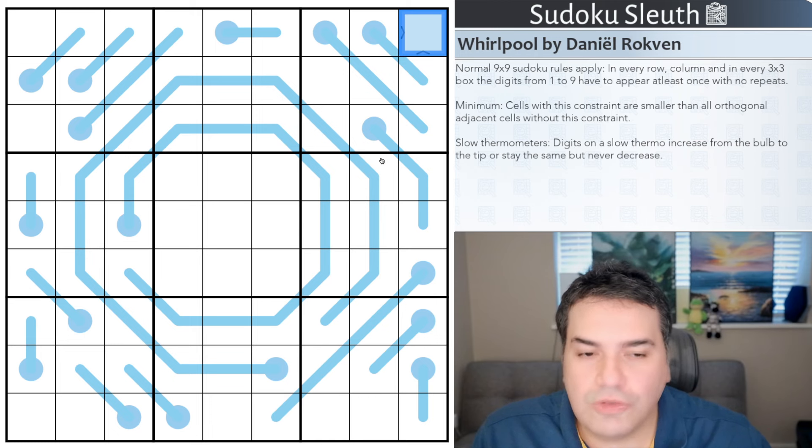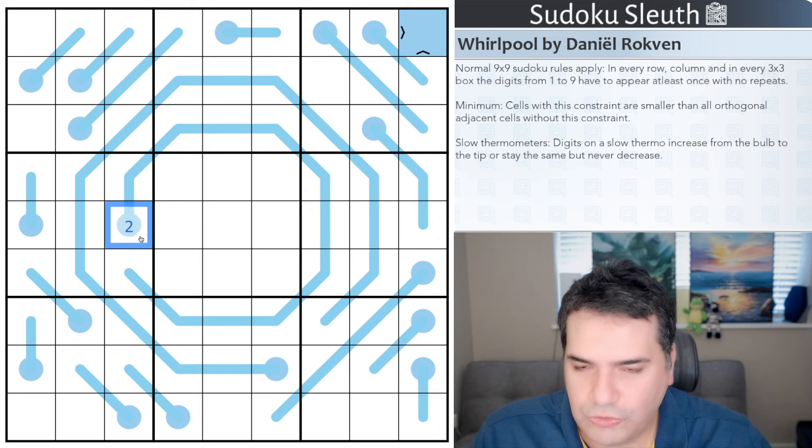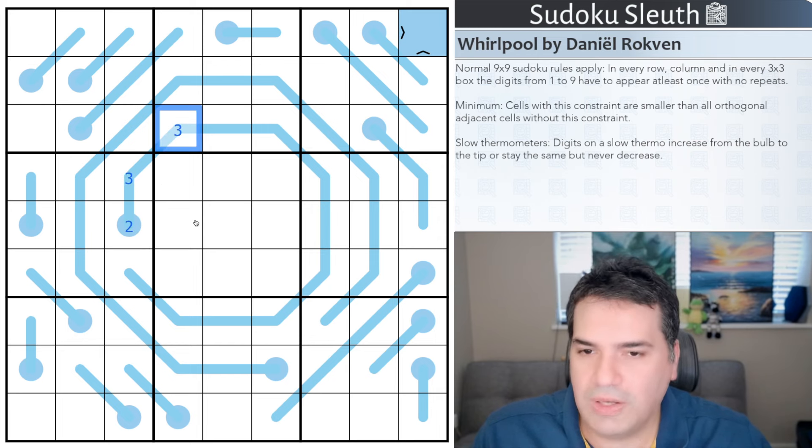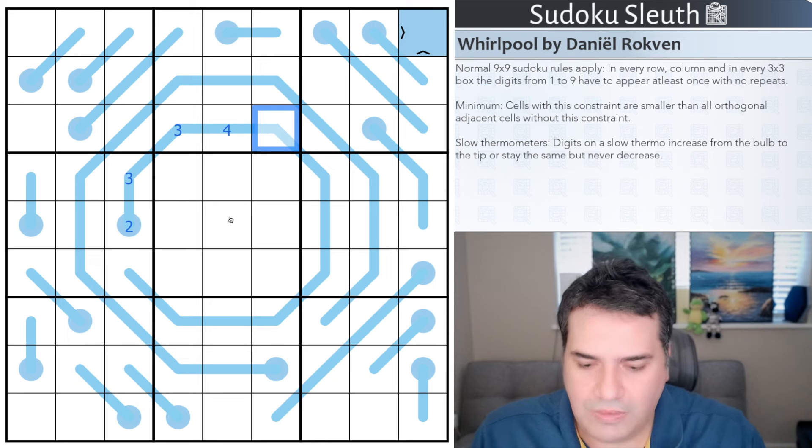Lastly, we've got slow thermometers. Digits on a slow thermo increase from the bulb to the tip or stay the same, but they never decrease. For example, I could do something like two, three, and I can be slow. That could go three again. What I can't do is go back down again and decrease. So this would be a valid setup. This wouldn't be a valid setup.